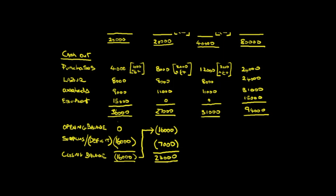How much do we need to borrow? It looks like at least 23,000. What about December? The opening balance is minus 23,000 — the closing balance of November becomes the opening balance of December. In December we have 40,000 coming in, 31,000 going out — so that's a surplus, thankfully. We've got 9,000 positive. So what's our bank balance going to be? Minus 23 plus 9 — that's 14,000 negative.